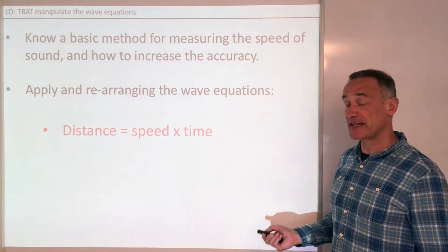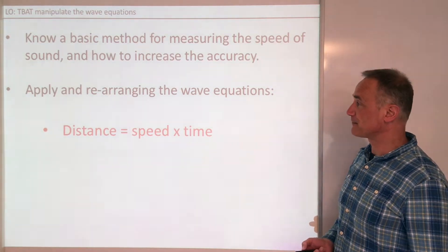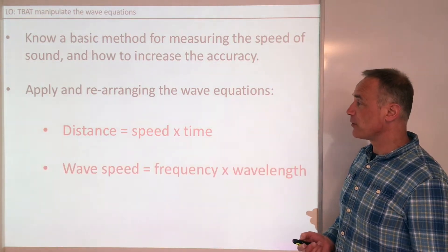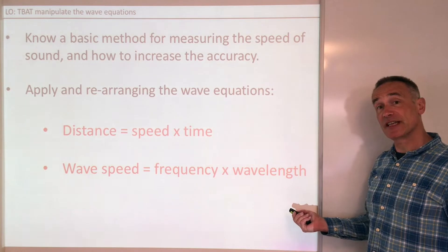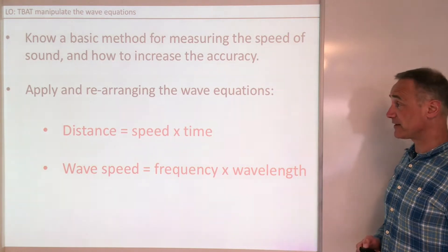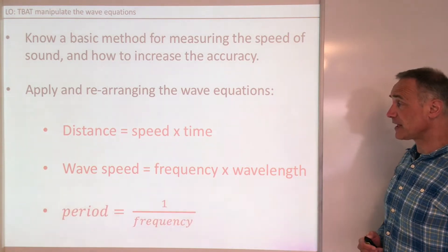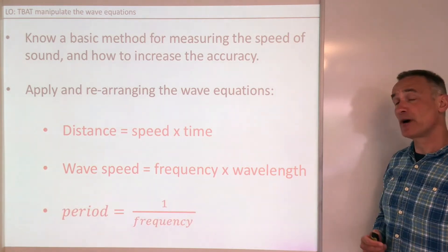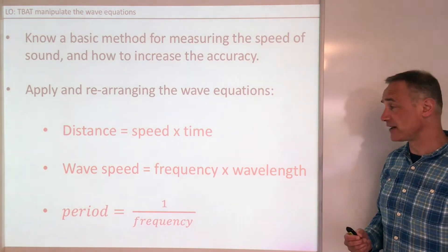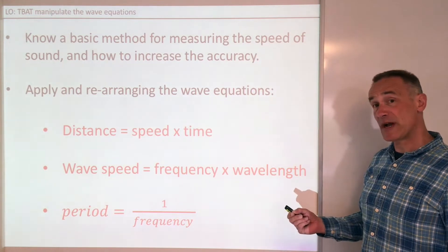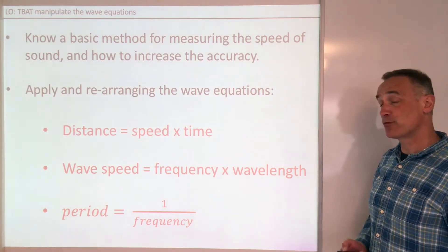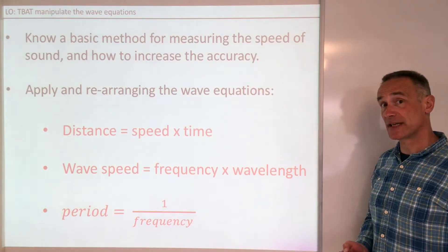Distance is speed times time. Wave speed equals frequency times wavelength. And finally, what we looked at last time, period of a wave equals 1 over frequency.